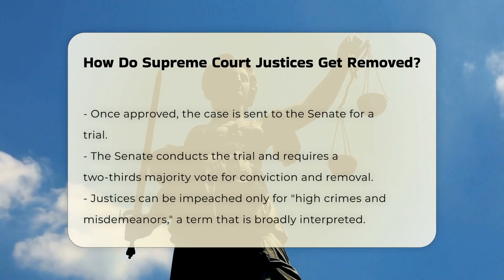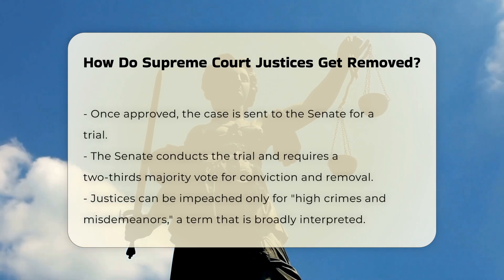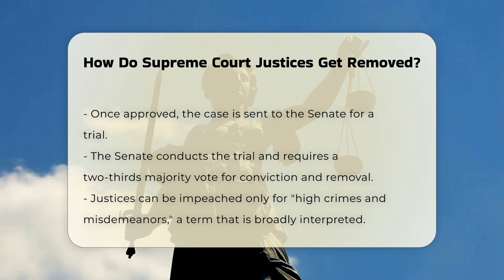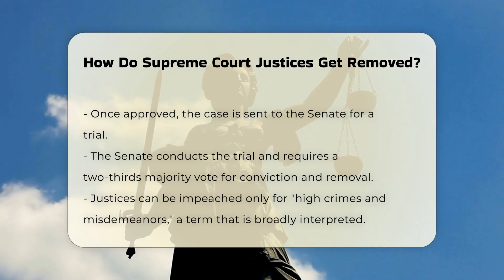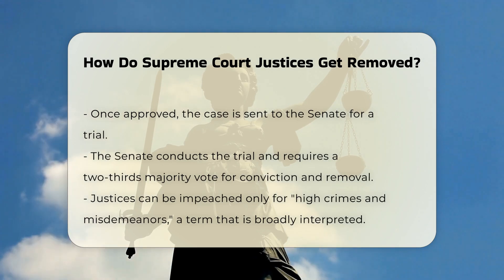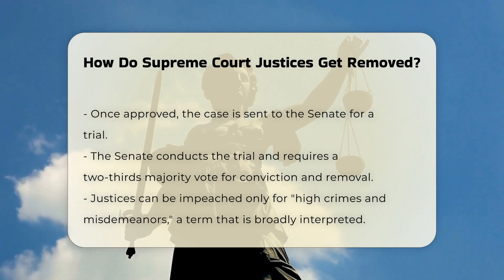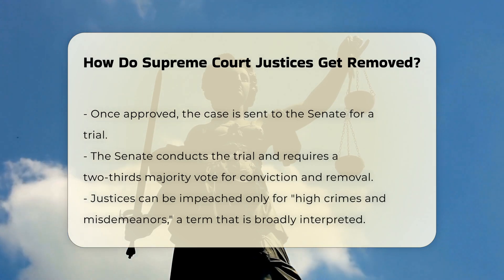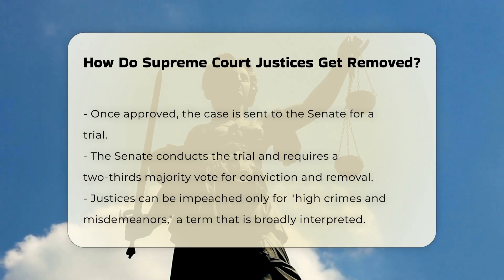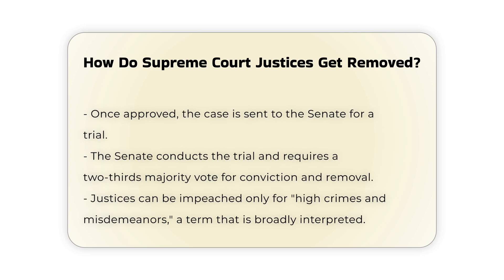Grounds for impeachment: Supreme Court justices can be removed only for high crimes and misdemeanors, a term that is not strictly defined but generally includes serious offenses such as corruption, abuse of power, or other significant misconduct. The House has broad discretion to determine what constitutes a high crime or misdemeanor.